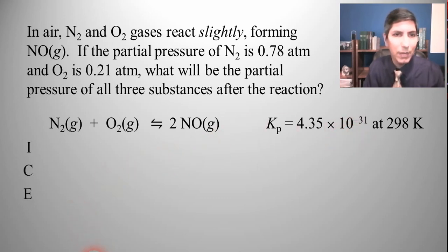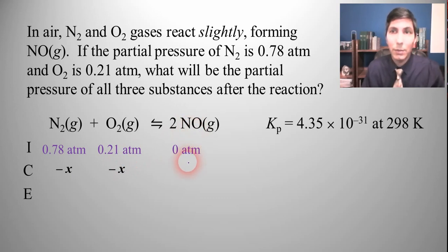So let's use an ICE box here. Since this is talking about partial pressure we have a Kp. Let's plug in the pressures. Nitrogen is 0.78 atmospheres, oxygen is 0.21 atmospheres and nitrogen monoxide is zero. Nitrogen is going to be minus x, oxygen is also minus x, and NO is going to go up by 2x because there's a 2 right there. So our equilibrium values will be 0.78 minus x, 0.21 minus x, and 2x.